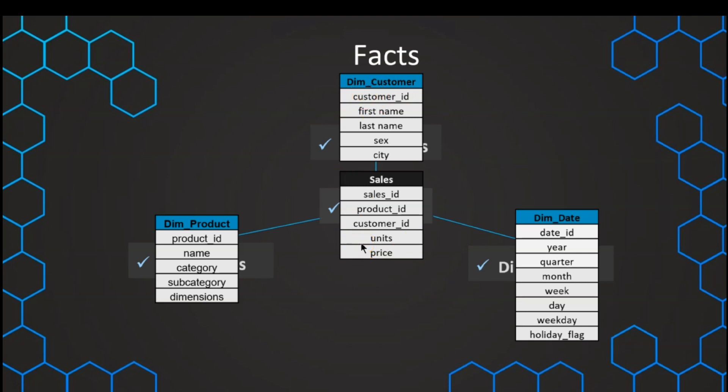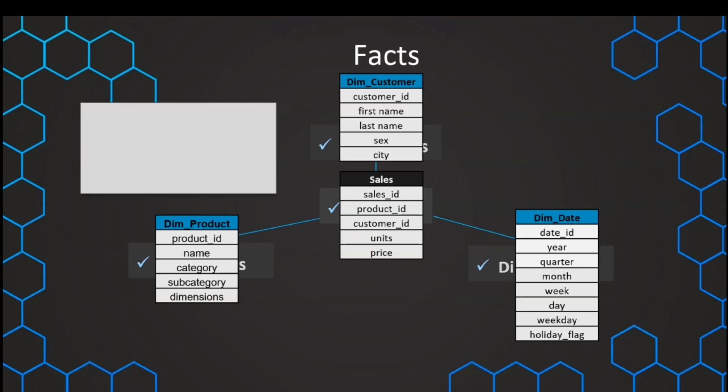The fact is in the center of our star schema, and it contains the important measurement of our company. For example, it can be the sales, and we can measure the units sold or the profit that we have made.